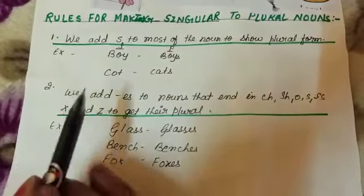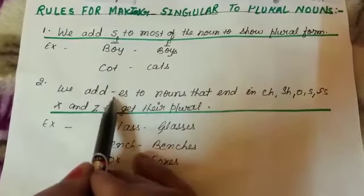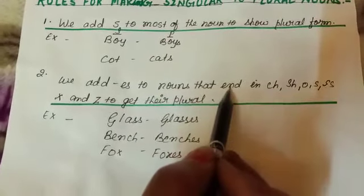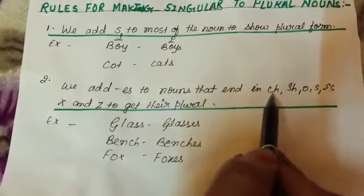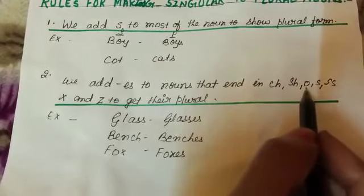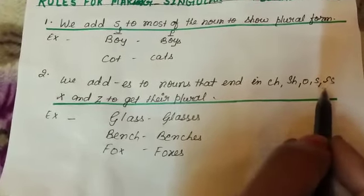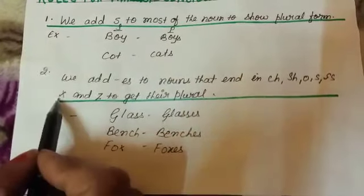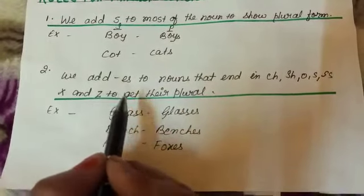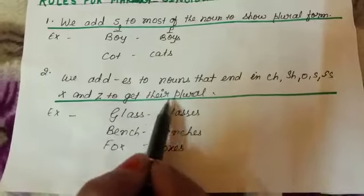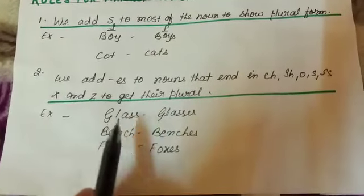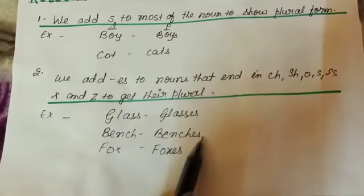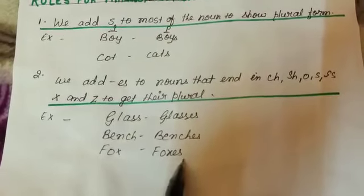Rule number 2: we add ES to nouns that end in CH, SH, OS, SS, X, or Z to get their plural. Example: glass → glasses, bench → benches, fox → foxes.